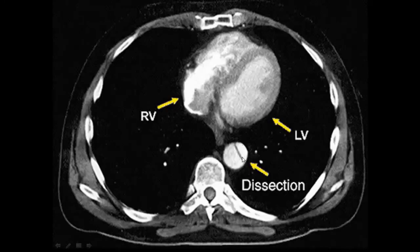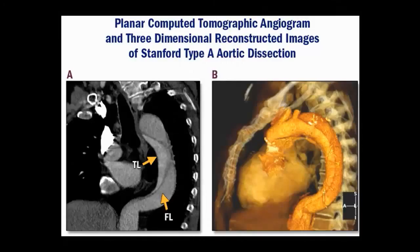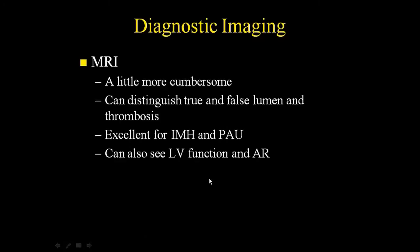Here's what it looks like on CT — the classic half-moon appearance. Here's another example showing the true lumen and the false lumen. The flow in the false lumen is slower, which is why contrast attenuation is a bit lower compared to the true lumen. There's the flap and the false lumen clearly visible. A 3D reconstruction can also be made. MRI is too cumbersome for unstable patients, but it can show aortic valve function, aortic regurgitation, and whether the lumen is thrombosed — very helpful for intramural hematomas.